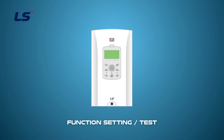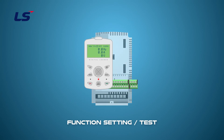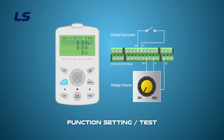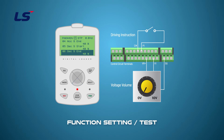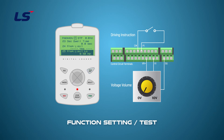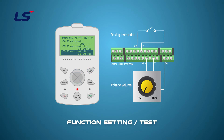Now let's set the upper and lower limits of the output frequency to verify that it is operating within the set range. Set the frequency limit ADV24 to YES. Set the lower limit frequency ADV25 to 15 Hz, and set the upper limit frequency ADV26 to 40 Hz.